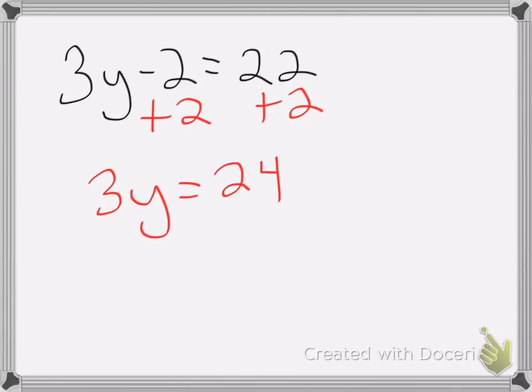And I need to divide both sides by 3 to get rid of the 3 here. Those cancel. So y equals 24 divided by 3, which is 8.